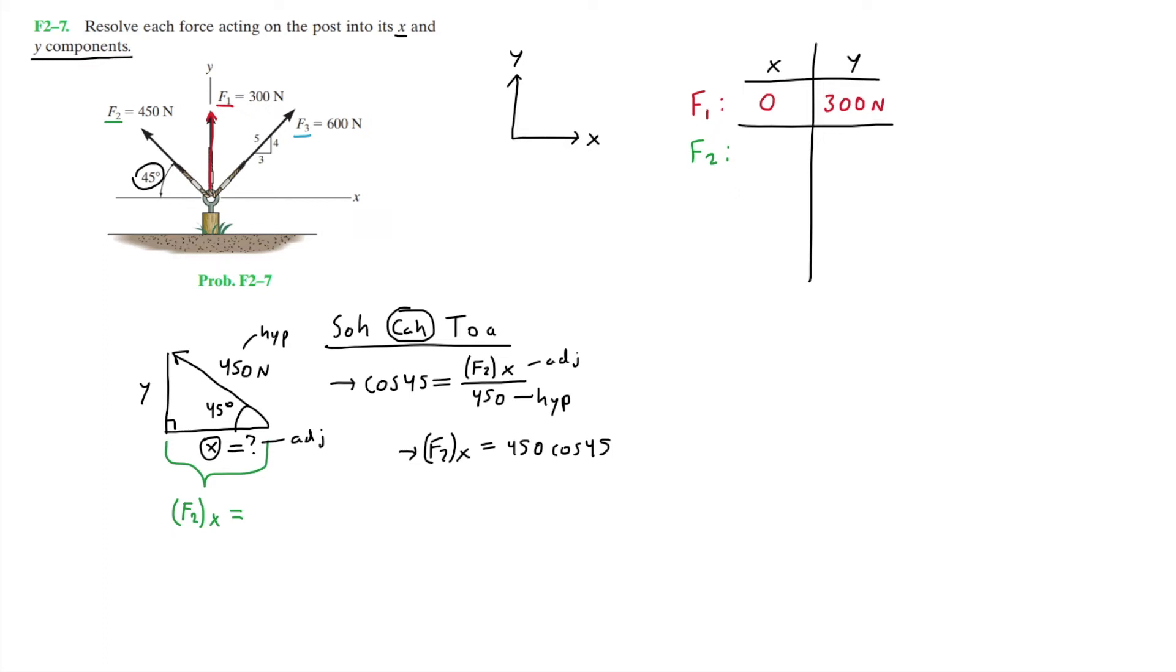Now we need to be careful with our signs here, since the direction of F2 is given at an angle towards the negative X direction. Forces are vectors, so it is important to account for direction. Here on the diagram, this is our positive X direction and this is the negative. This force is pointing towards the negative X direction, but towards the positive Y direction. So F2X is really going to be negative 450 cosine of 45 degrees, which equals negative 318. Hence, F2X equals negative 318 Newtons.